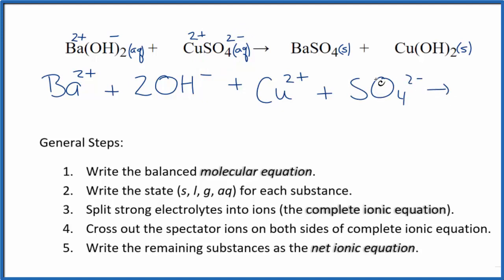For the products, we don't split solids apart in net ionic equations. So we'll just have our BaSO₄, that'll stay together, and we'll have our copper 2 hydroxide. That'll also stay together. So this is the complete ionic equation.